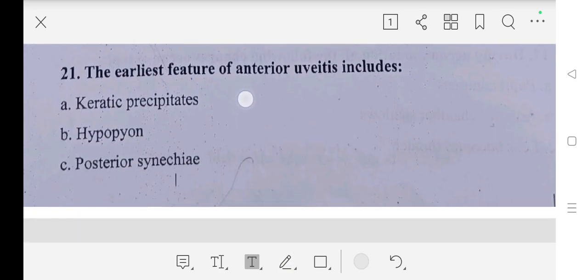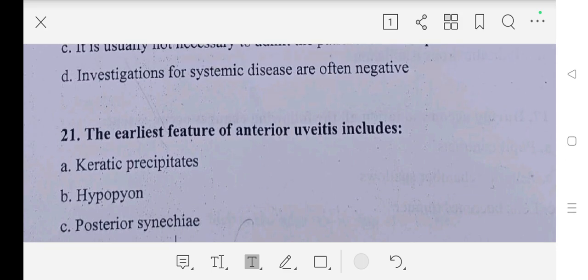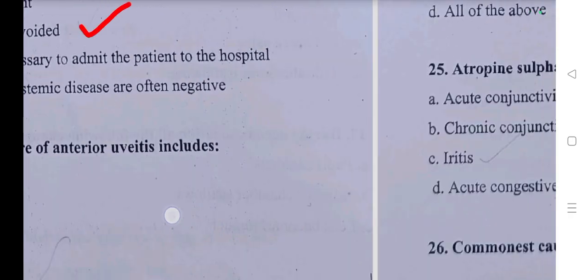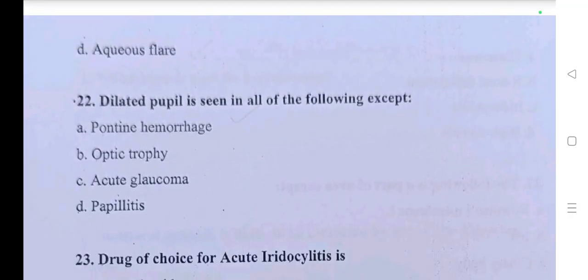Question number twenty-one: the earliest feature of anterior uveitis includes — A part: keratic precipitates, B part: hypopyon, C part: posterior synechiae, D part: aqueous flare.